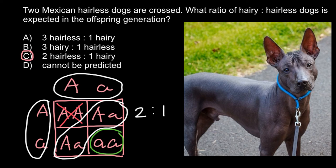Why did dog associations take so long to register it? Because dog associations only register breeds that are pure lines — meaning there is no variation when you cross two dogs of the same breed; all the progeny must have the same appearance. But as you can see, this dog produces about 66% hairless and about 33% haired puppies in a litter. Phenotypically, their appearances are very different — if you saw both hairless and haired puppies together, you wouldn't be able to tell they were the same breed. So it took a very long time to recognize this breed.